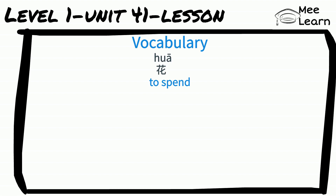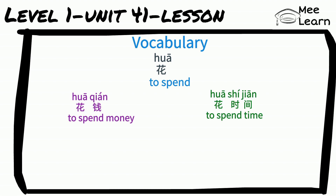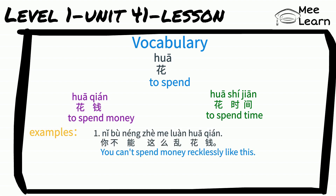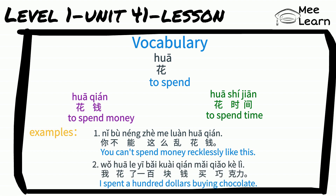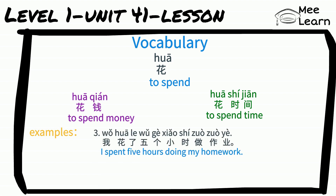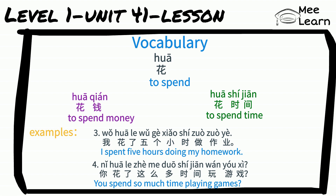花 means 'to spend' — it can be to spend money (花钱) or to spend time (花时间). For example: 你不能这么乱花钱 — You can't spend money recklessly like this. 我花了一百块钱买巧克力 — I spent a hundred dollars buying chocolate. 我花了五个小时做作业 — I spent five hours doing my homework. 你花了这么多时间玩游戏 — You spend so much time playing games.